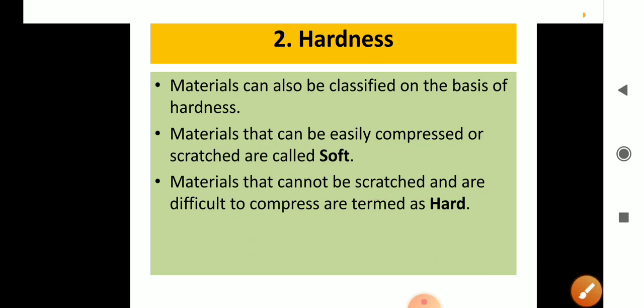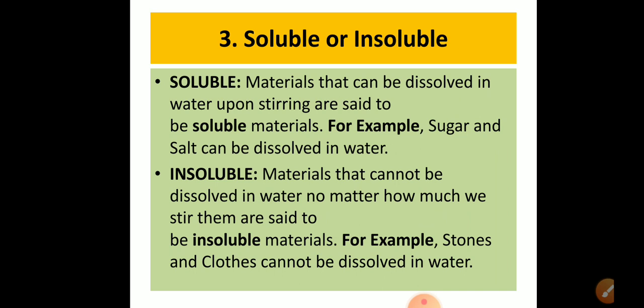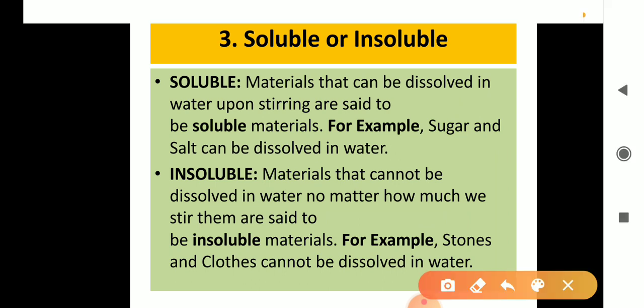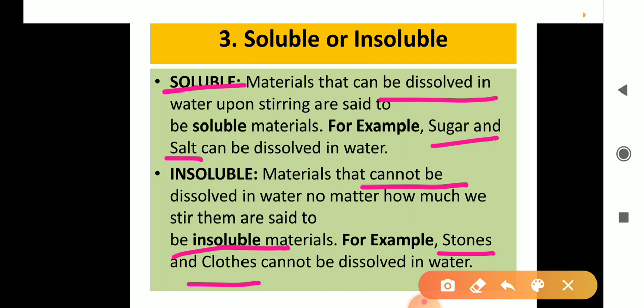Next is solubility. Materials which can be dissolved in water are called soluble, and those which cannot be dissolved in water — no matter how much you stir them — are said to be insoluble. For example, sugar and salt are soluble in water. Stones, sand, and cloth cannot be dissolved in water, so they are called insoluble materials.